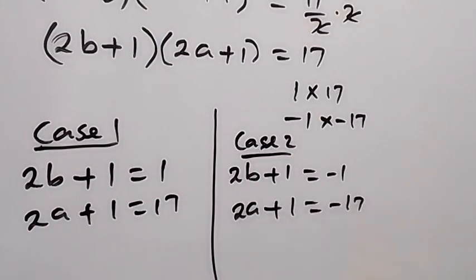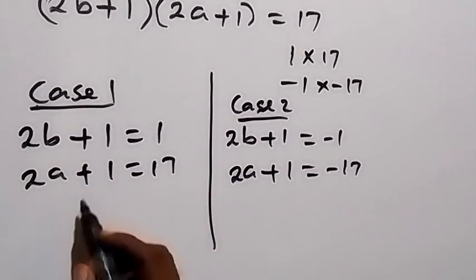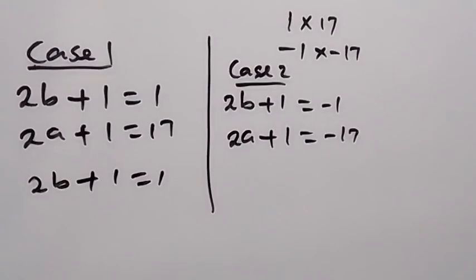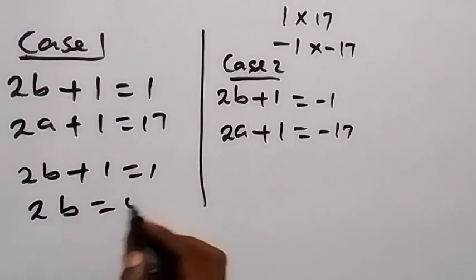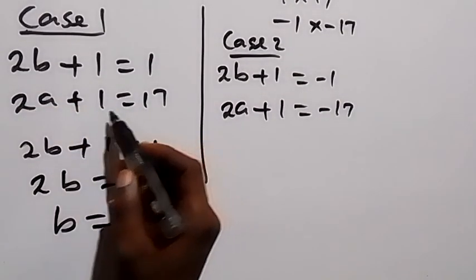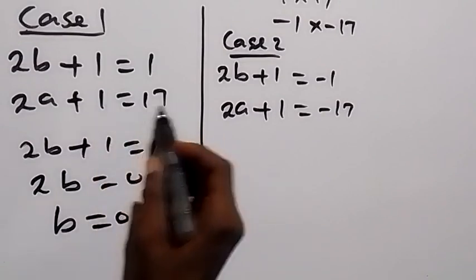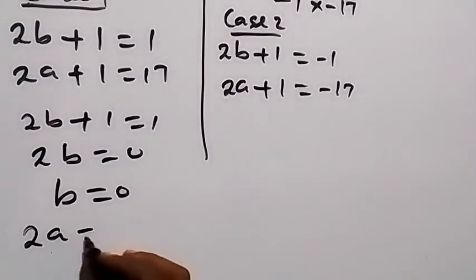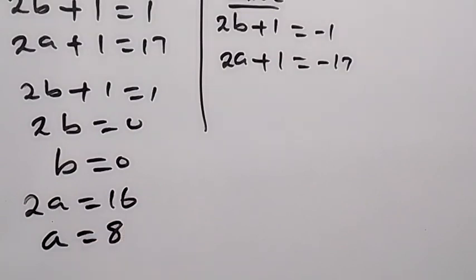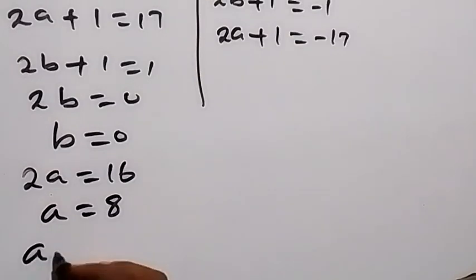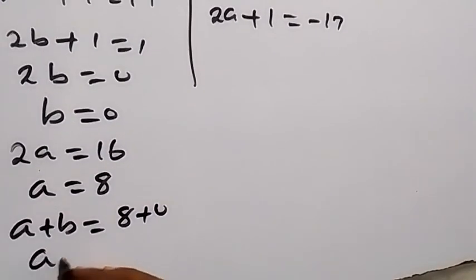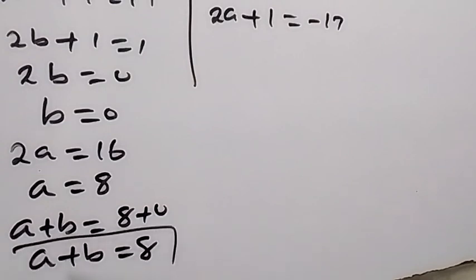Solving Case 1: from 2b + 1 = 1, taking 1 to the other side gives 2b = 0, so b = 0. From the second equation, 2a + 1 = 17, taking 1 to the other side gives 2a = 16, so a = 8. The desired result a + b equals 8 + 0, which is 8. So a + b equals 8.